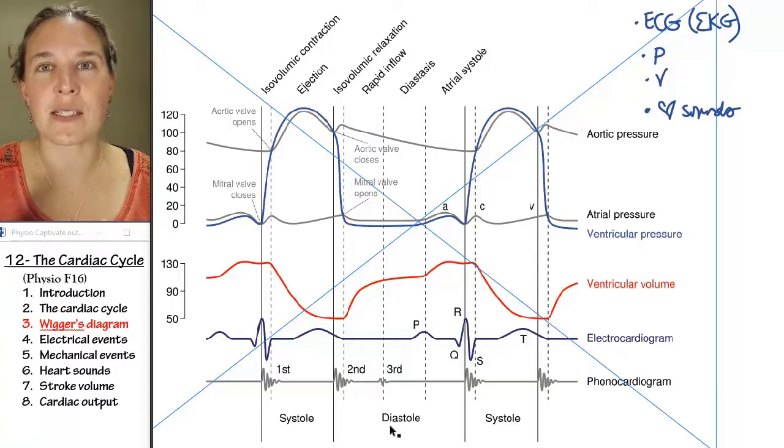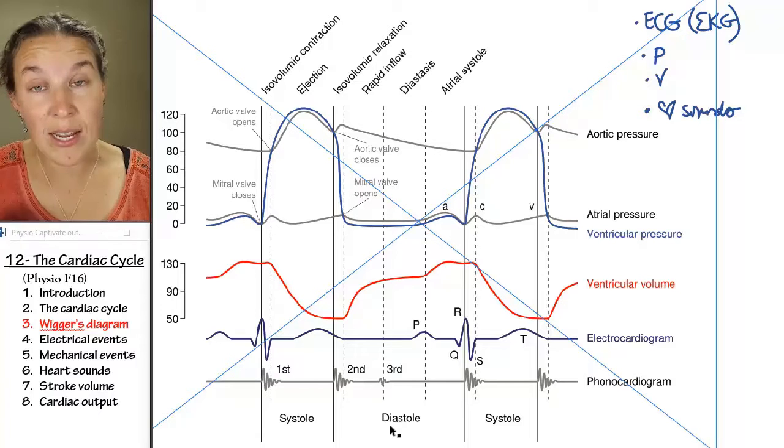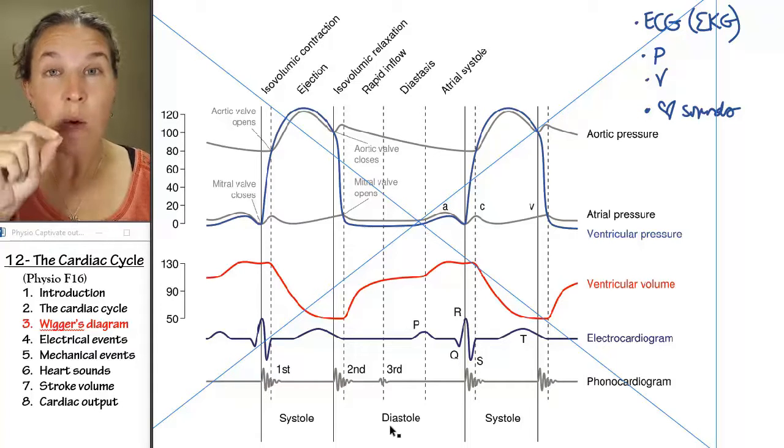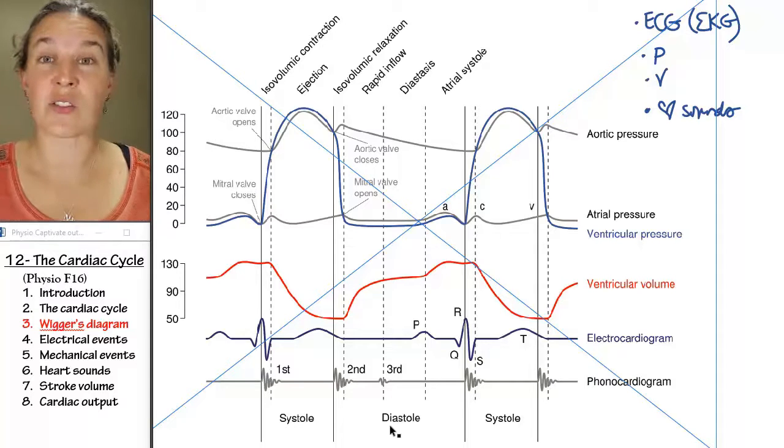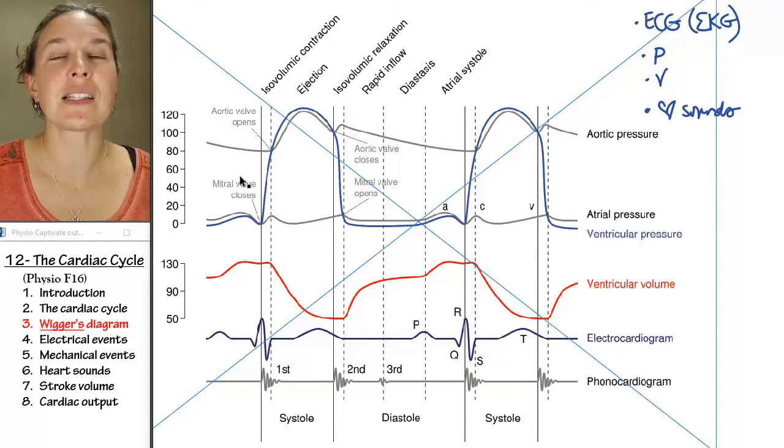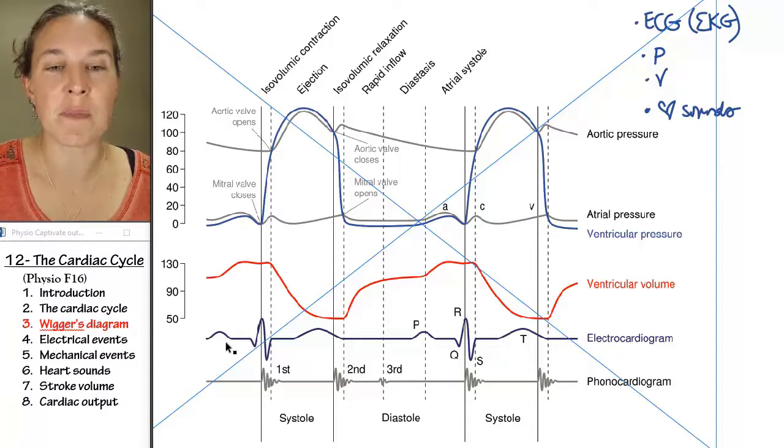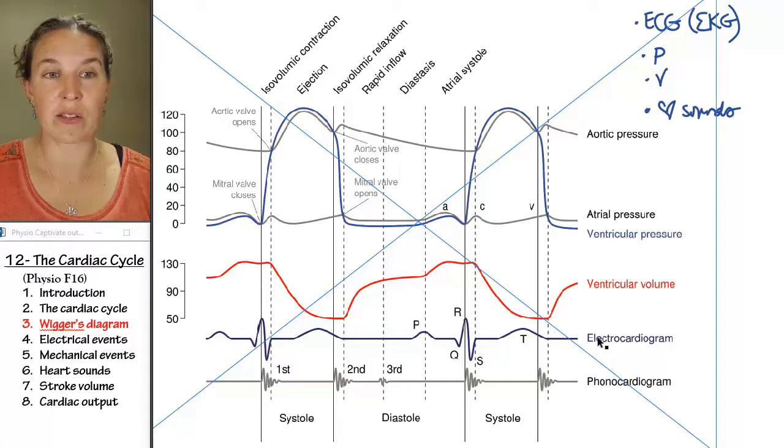We're going to start out with the electrical events. We're going to look at the whole cardiac cycle. So what's happening with the electrical events? Because that really starts the whole process. The electrical activity of the heart is measured in this electrocardiogram line of Wigger's Diagram, and we're going to break that out and look at it more closely.